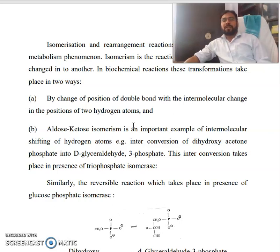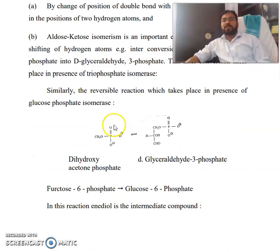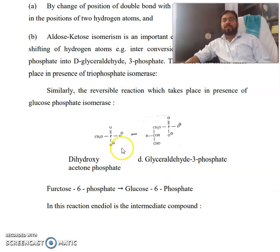Similarly, the reversible reaction takes place in the presence of glucose phosphate isomerase. You can look at this — this is dihydroxyacetone phosphate and this one is glyceraldehyde-3-phosphate.